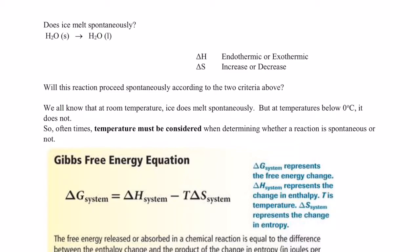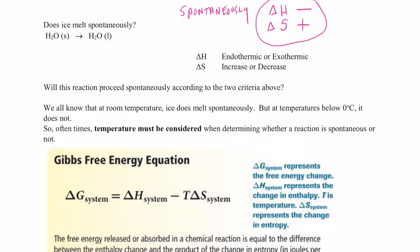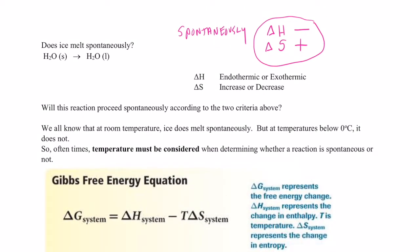We're back continuing to talk about spontaneity of chemical reactions. Nature goes in two directions spontaneously. Delta H: nature favors exothermic reactions, so a negative delta H. For entropy, delta S: nature favors more disorder, so a positive delta S. Nature favors reactions with a negative delta H and a positive delta S.